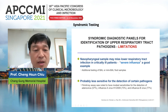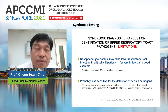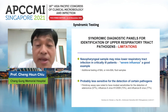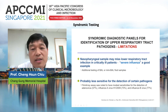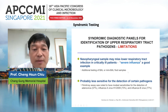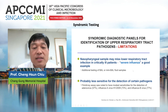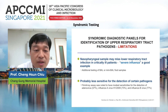Importantly, when using the RP panel, nasopharyngeal samples may miss lower respiratory tract pathogens in critical patients — this is especially true for severe influenza. It has been known that rapid influenza testing from nasopharyngeal samples may not reflect the true negative result in the lower airway. The molecular testing panel is also probably less sensitive for detecting certain pathogens, such as some strains of influenza A and B.